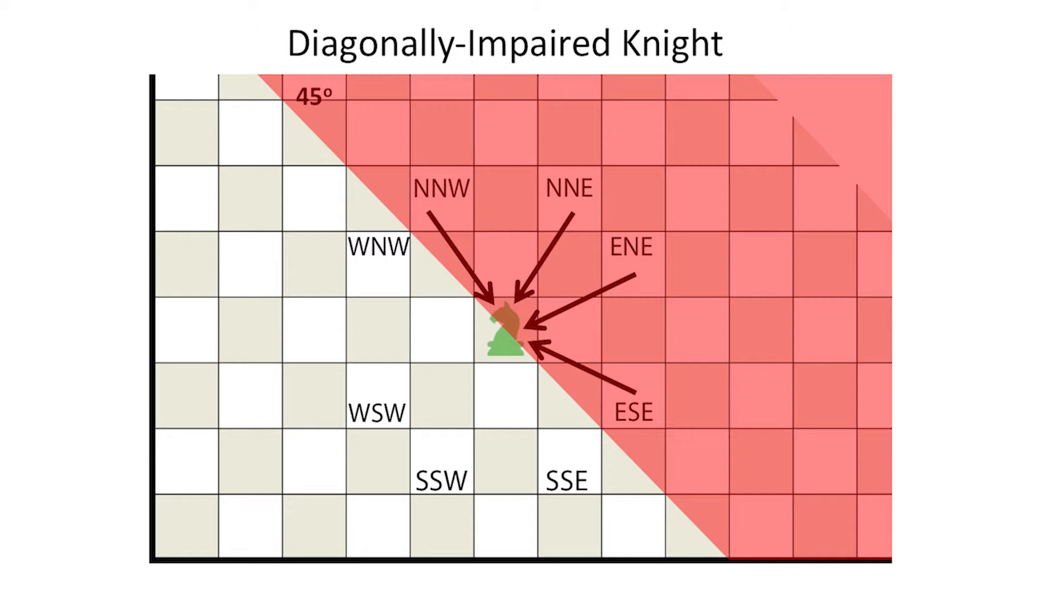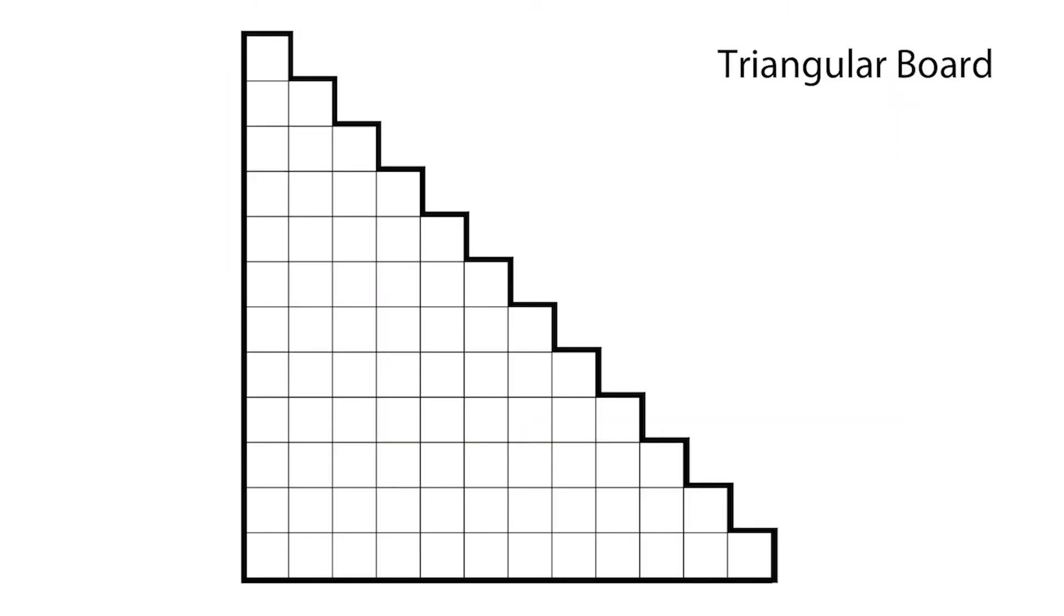On a rectangular board, his mobility is sometimes restricted by the northern or eastern boundaries, so we start with a triangular board, which has no such restrictions.